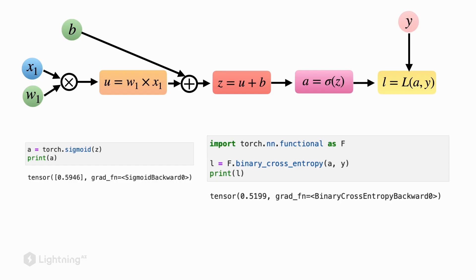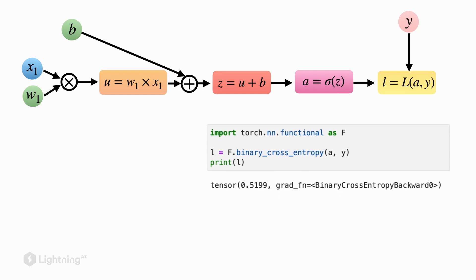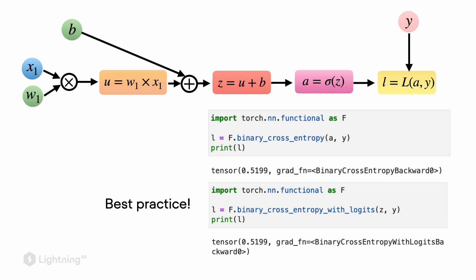Let me interject here with a small recommendation before we move on. In PyTorch, it's best practice not to use the binary cross entropy loss and use the binary cross entropy with logits loss instead.